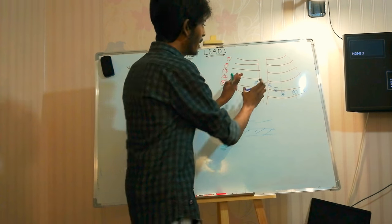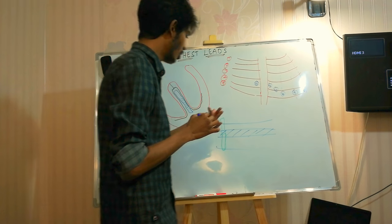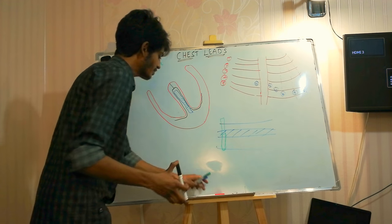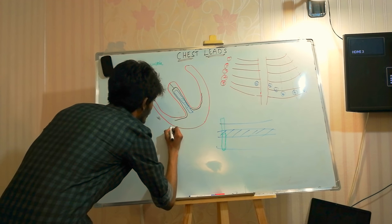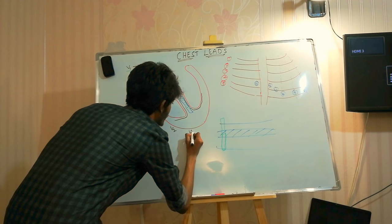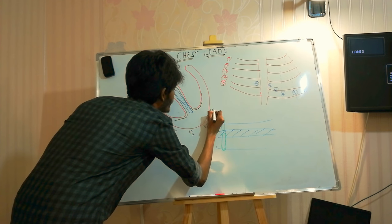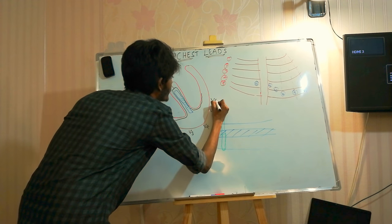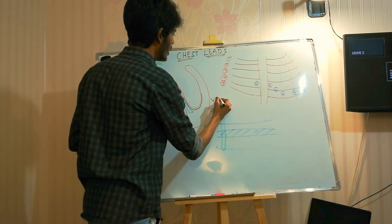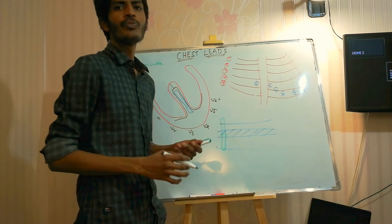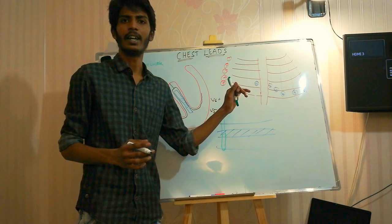When we compare the projection of these leads to the cross-section of the heart, V1, V2, V3, V4, V5, and V6 are positioned approximately like this. Since unipolar leads have only one terminal — a positive terminal — we will see how the QRS complex changes in each and every lead.